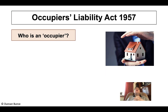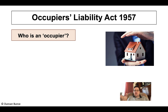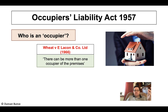Having dealt with who is a lawful visitor, the next question is who is an occupier. According to the case of Wheat v Lacon & Co. Ltd, firstly there can be more than one occupier of the premises, and you don't have to be a property owner — that would be very restrictive and would narrow the amount of claims that could be made.